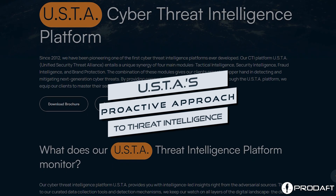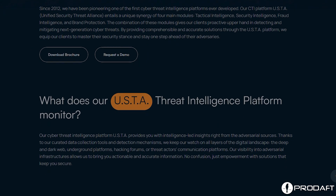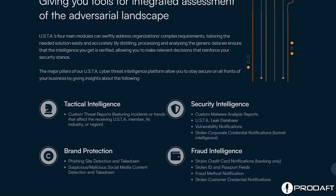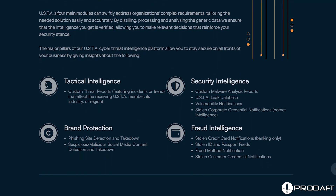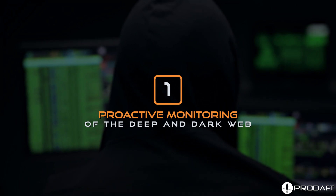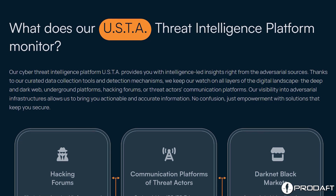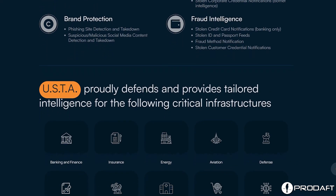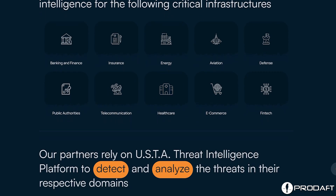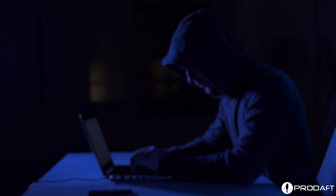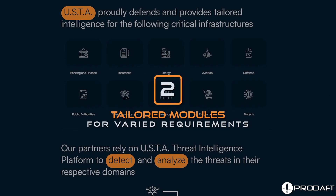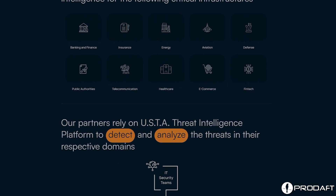The USTA Cyber Threat Intelligence Platform offers a multimodal strategy to protect enterprises against the complex risks presented by constantly changing cyber threats. The USTA platform proactively monitors the dynamic environments of the deep, dark, and clear webs. The platform guarantees a comprehensive picture of prospective threats by monitoring cyber attack forums, threat actor communication platforms, darknet black marketplaces, open sources, traffic analysis tools, and threat data submitted by members.